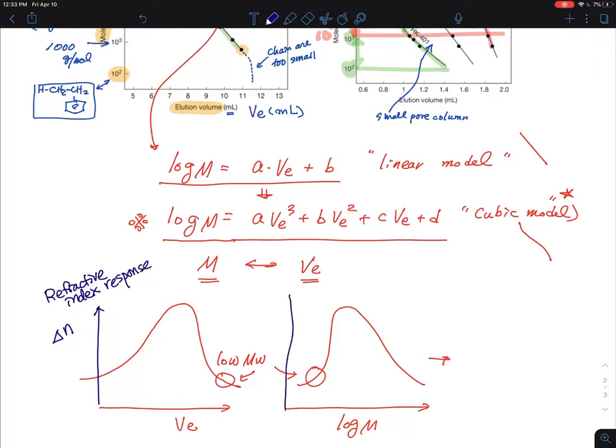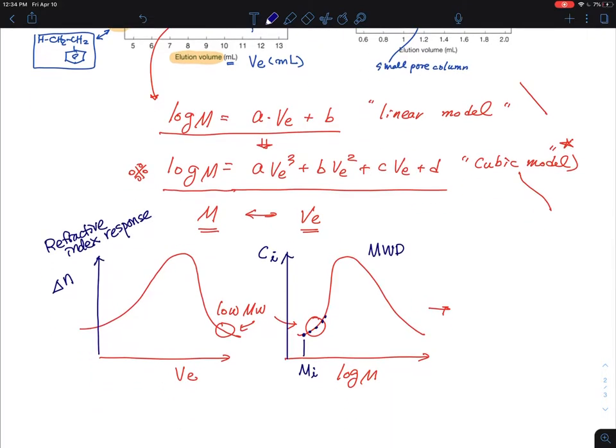For example, the delta-n refractive index response, detector response, and then they consider that as, okay, so this is a dn/dc, so it is ci. Each one of them has a data point, so this is corresponding to mi of the sample. There's a lot more theories has been developed for the analysis of molecular weight distribution from the GPC, but due to the fast data acquisition now, the analysis is much more simpler these days.